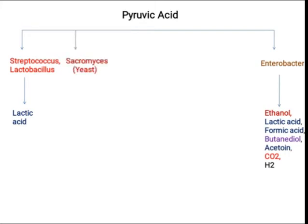Similarly, if we talk about Saccharomyces cerevisiae, this fermentation is known as alcoholic fermentation, and in alcoholic fermentation the products are ethanol and CO2. If we talk about Escherichia and Salmonella, we are getting ethanol, lactic acid, succinate, acetic acid, CO2, and H2.